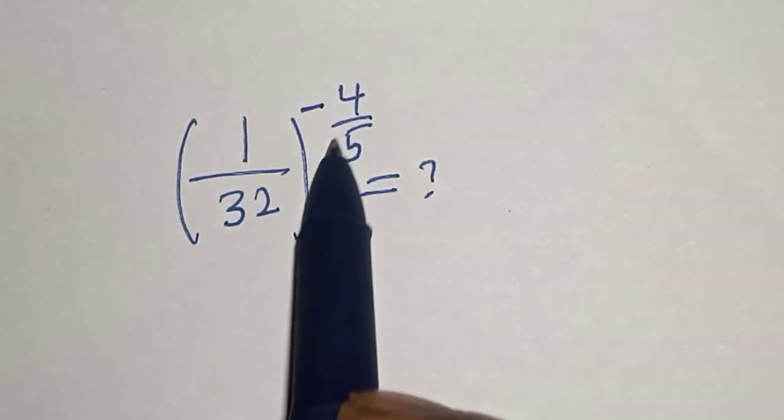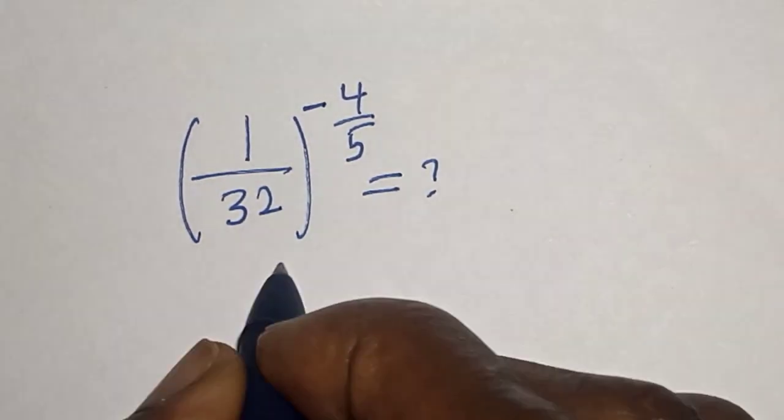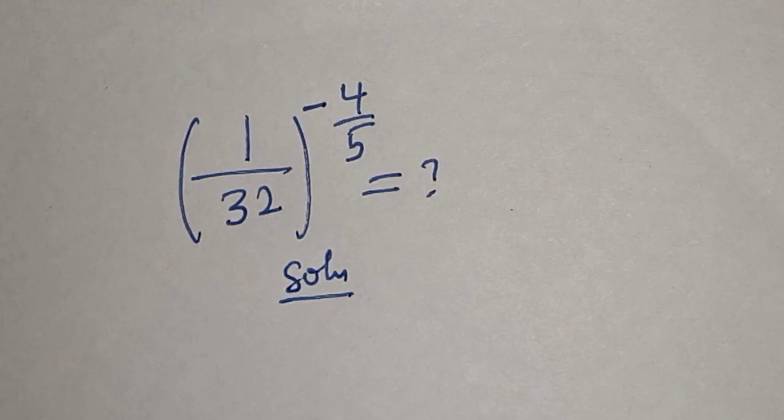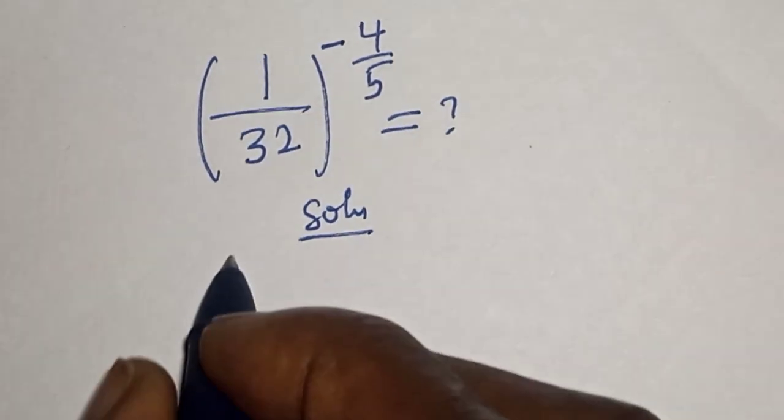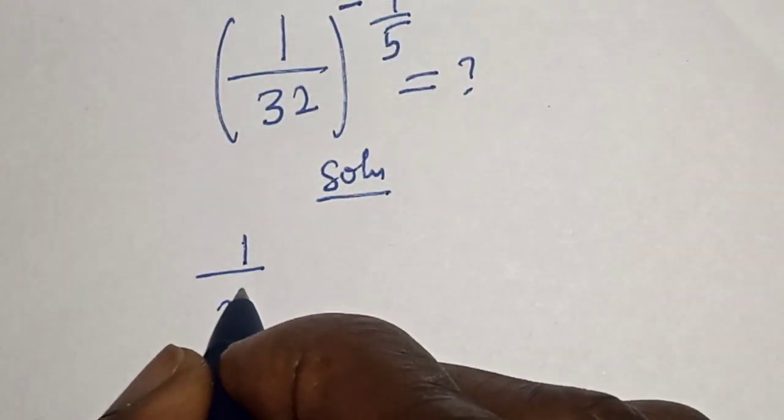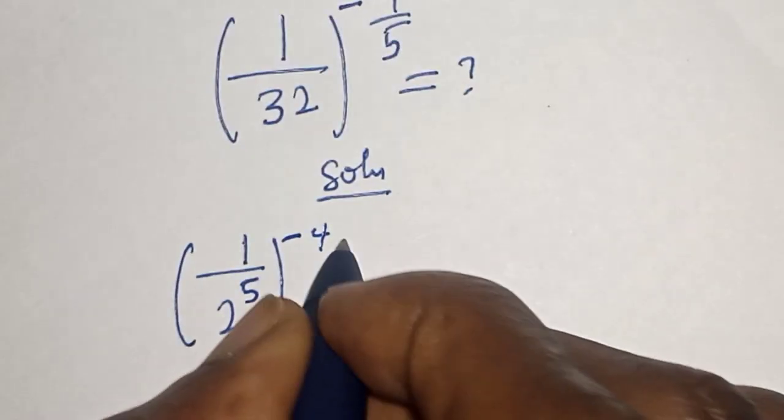Like, share, comment and subscribe. Solution: Then 1 raised to power 1 divided by 32 can be written as 1 over 2 raised to power 5, raised to power minus 4 over 5.